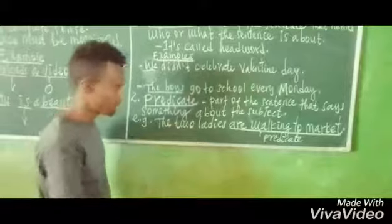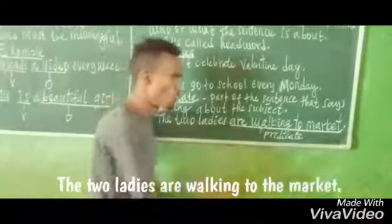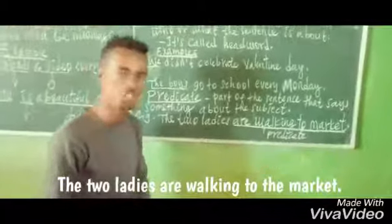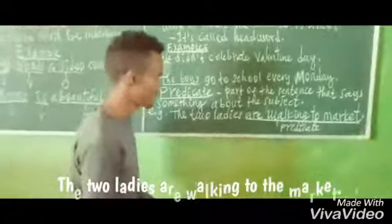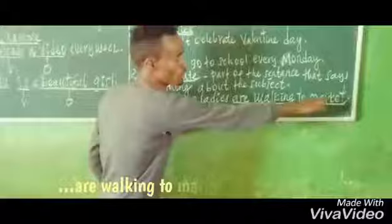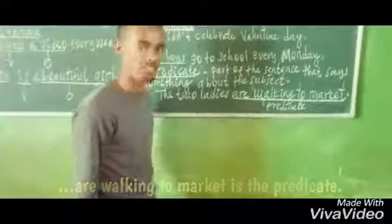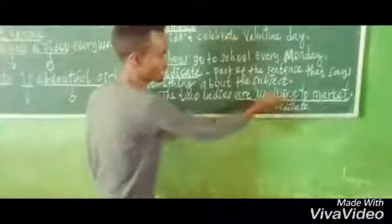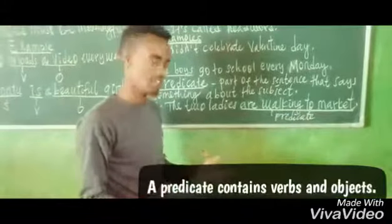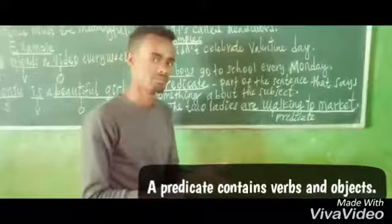Let's see this example: 'The two ladies are walking to market.' In this sentence, the words 'are walking to market' are what we call the predicate. This part is called the predicate. The predicate contains the verb and the object words.